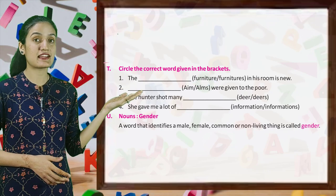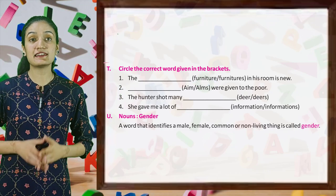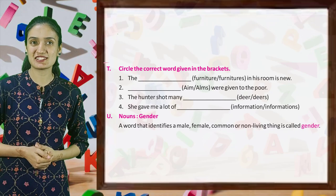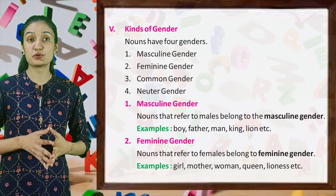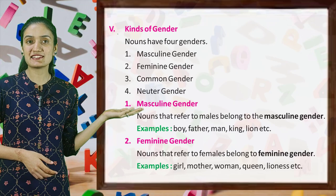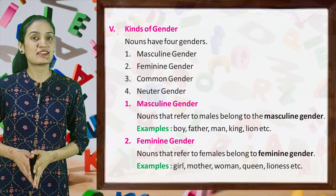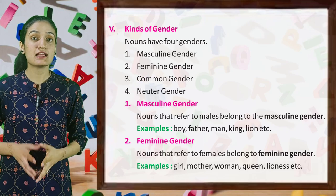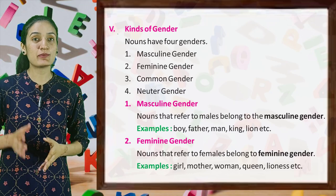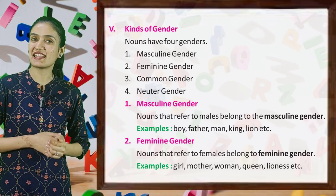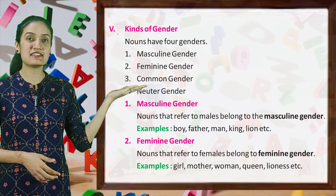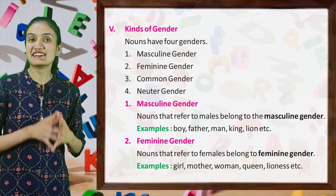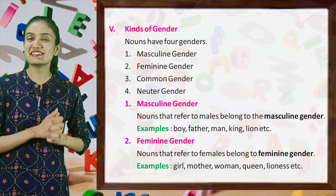Now next is nouns of gender. A word that identifies a male, female, common or non-living thing is called gender. So kids, let's begin with masculine gender. Nouns that refer to males belong to the masculine gender. Examples: boy, father, man, king, lion, etc. Next is feminine gender. Nouns that refer to females belong to the feminine gender. Examples: girl, mother, woman, queen, lioness, etc.